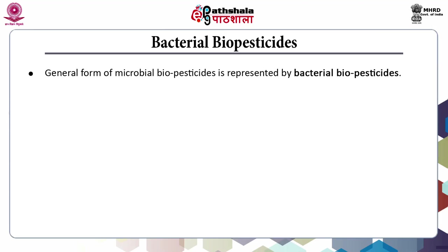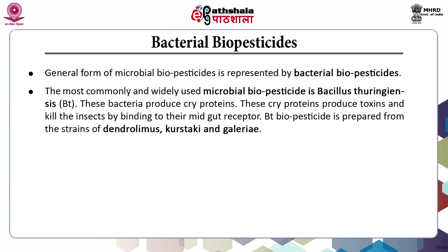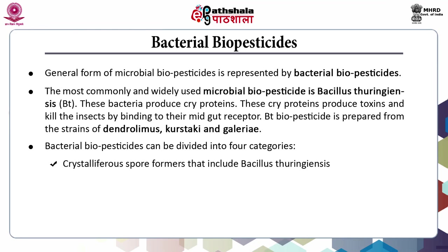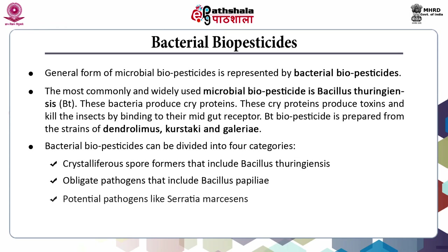Bacterial biopesticide is the most common form of microbial biopesticide. The most commonly used microbial biopesticide is Bacillus thuringiensis. These bacteria produce cry proteins, which produce toxins and kill insects by binding to their mid-gut receptor. Bt biopesticides are prepared from the strains of Dendrolimus, Kurstaki and Galleriae. Bacterial biopesticides are further subdivided into 4 categories: crystalliferous spore formers including Bacillus thuringiensis; obligate pathogens including Bacillus papillae; potential pathogens like Serratia marcescens; and facultative pathogens like Pseudomonas aeruginosa.